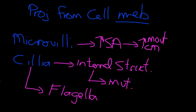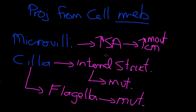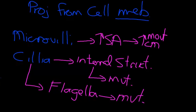Some people call flagella a third type — some say there's microvilli, cilia, and flagella. But flagella really has a relationship with cilia, because they are about movement as well. So let's have a look at some electron micrographic images and talk about the structure of them.